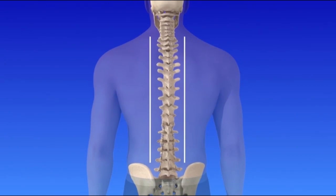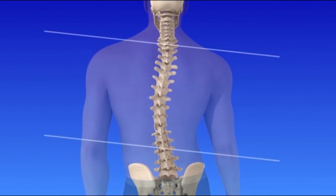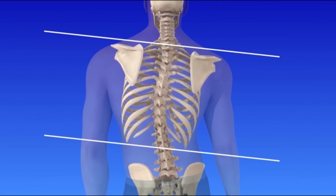Scoliosis causes an abnormal side to side curve of the spine. This affects the structure and posture of the rest of the body. One hip or one shoulder may appear higher than the other. The shoulder blades may stick out and the body may lean to one side.